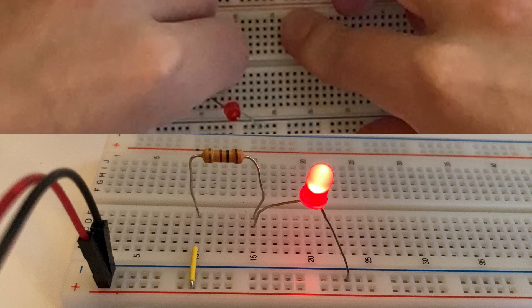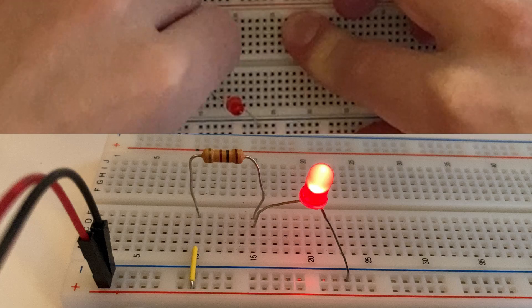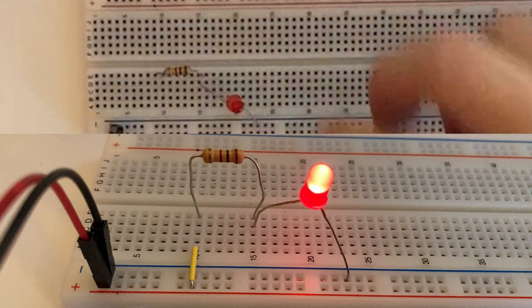Then take the resistor and connect one side to the same rail as the positive end of the LED and the other side to any other free rail.